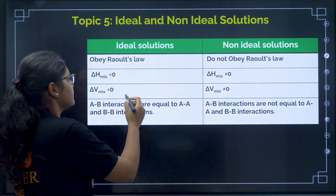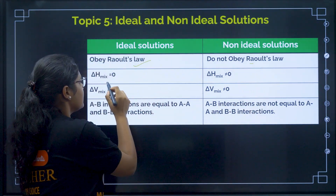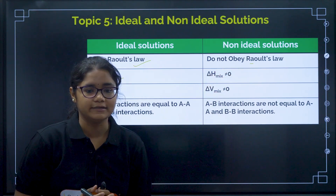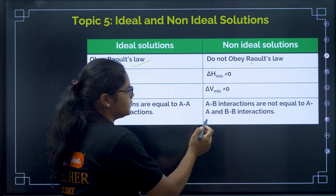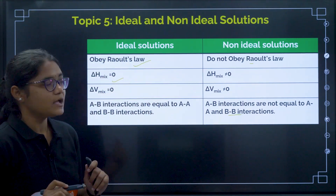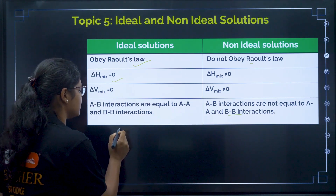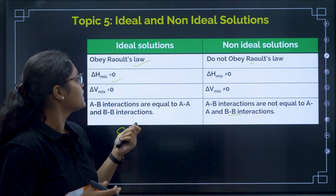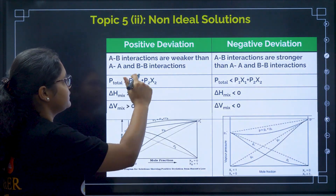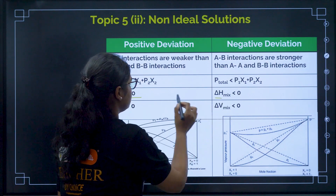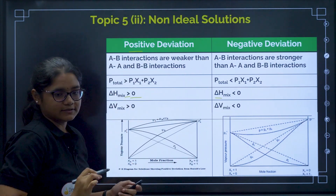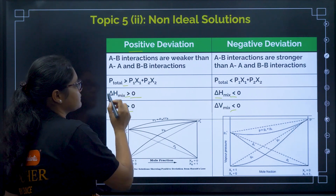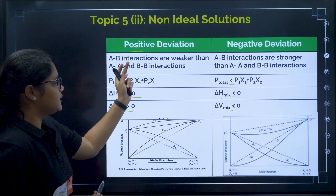Now ideal solutions and non-ideal solutions. The first obeys Raoult's law; the second does not. For ideal solutions, ΔH_mix = 0 and ΔV_mix = 0; for non-ideal, both are not equal to zero. A–B interactions equal A–A and B–B for ideal solutions but not for non-ideal. The differences between them are less important for competitive exams — what you need to learn are examples. For non-ideal solutions, remember positive and negative deviation: positive deviation has ΔH > 0, ΔV_mix > 0, and total pressure greater; negative deviation has ΔH < 0, ΔV_mix < 0, and total pressure less.